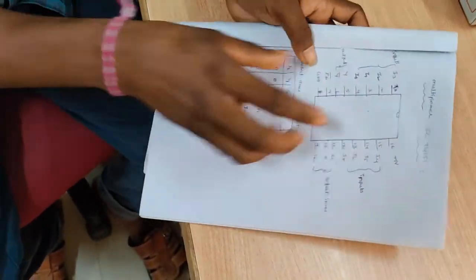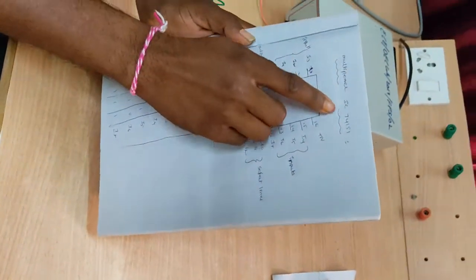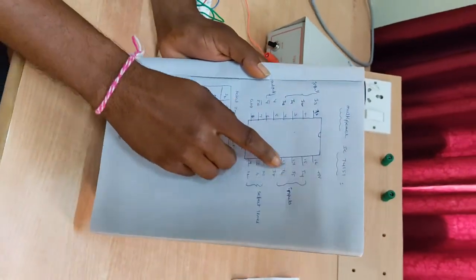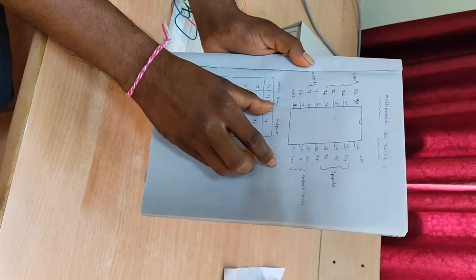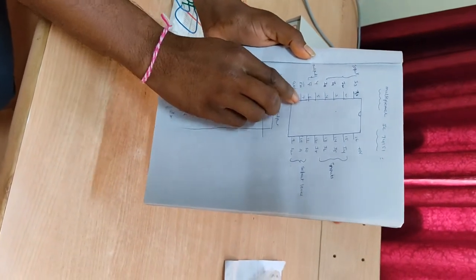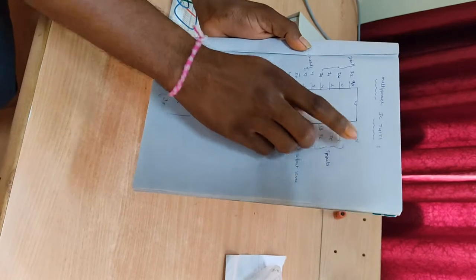So this is the pin diagram, that is IC number 74151. So it contains total 16 pins. The 8th pin is the ground and the 16th pin is the supply pin.